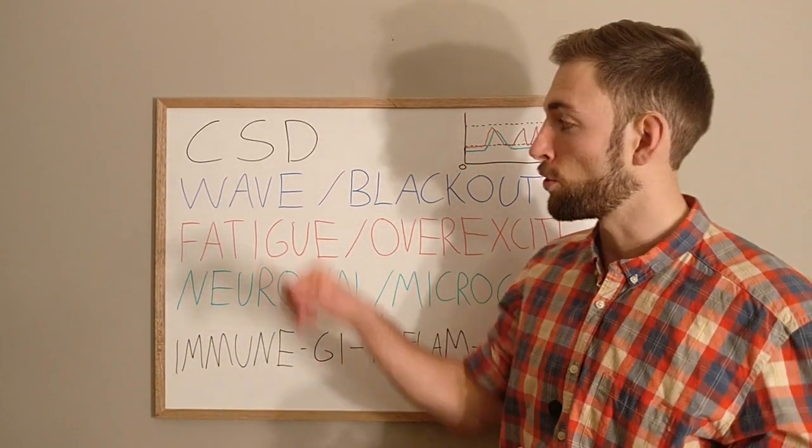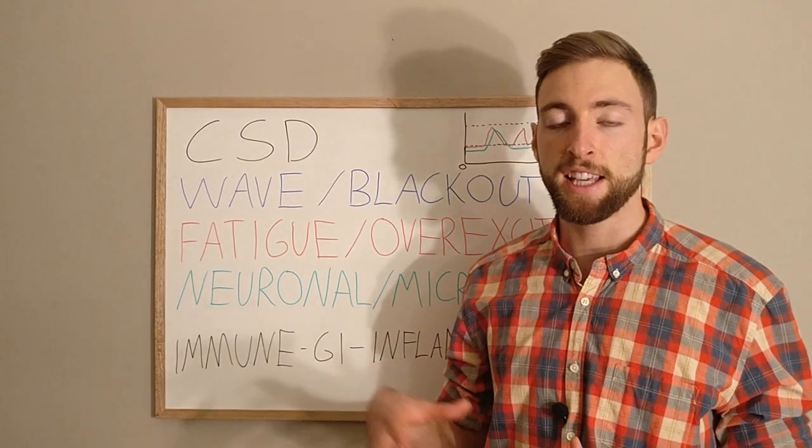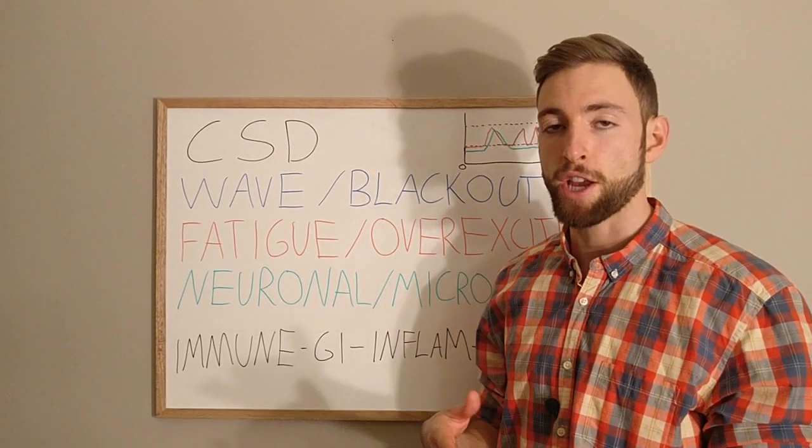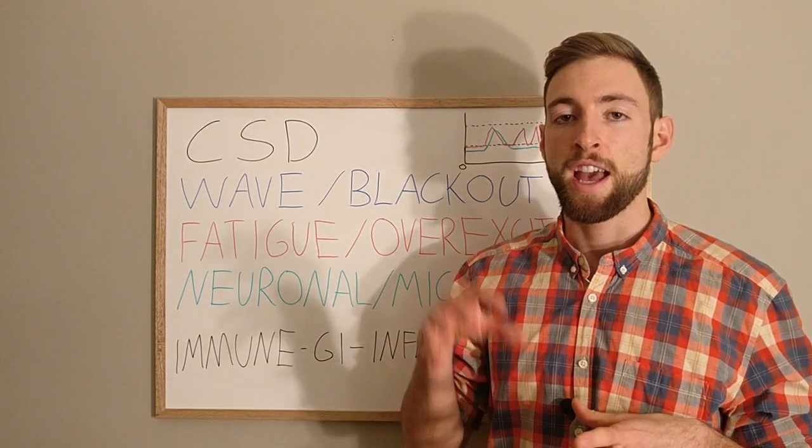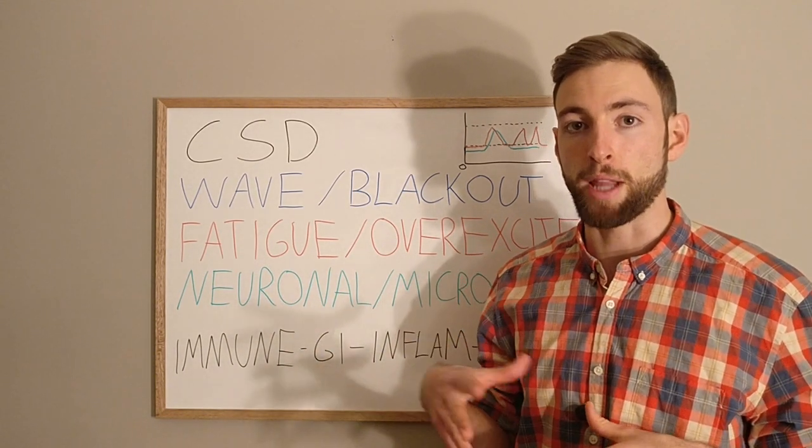The way we can understand it is through CSD. CSD is cortical spreading depression. And this was a phenomenon found in the brain of migraine with aura sufferers as well as people with epilepsy.